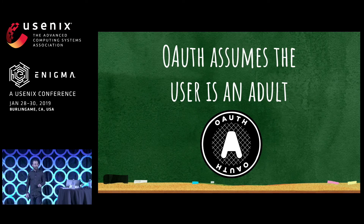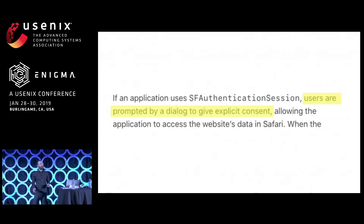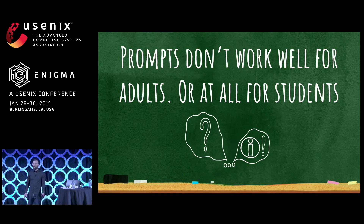Another prompt that adults and students struggle with is built into the weight-bearing protocol for identity on the web, OAuth. In the OAuth flows, the person making the decision about whether to share the data is the same person that the data is about. This doesn't make sense for students when adults have already decided for them to share this data. As platforms become more integrated and tightly controlled, we as designers lose the flexibility to modify these default behaviors. Prompts don't work well for the fully formed prefrontal cortexes they were designed for; they don't work at all for kids when they put the responsibility on the end user to make complicated safety decisions.